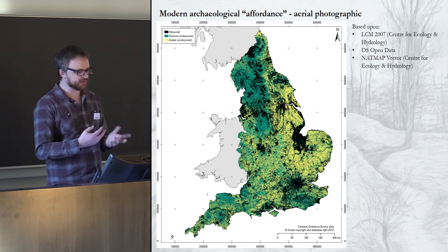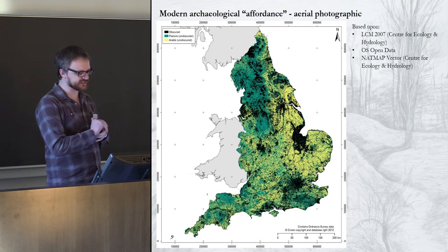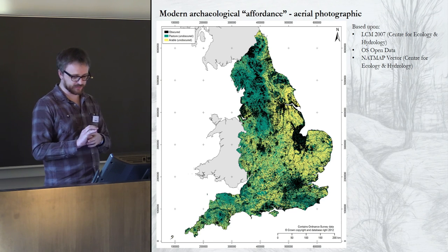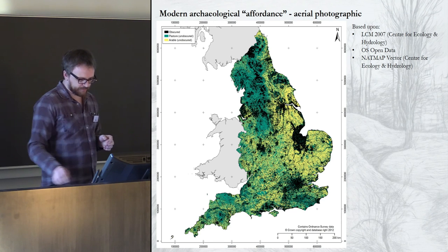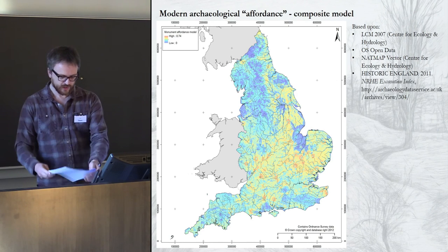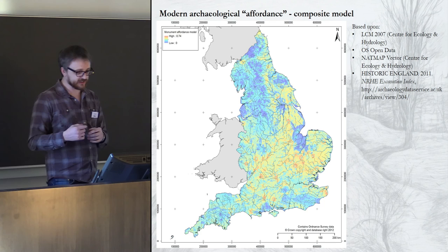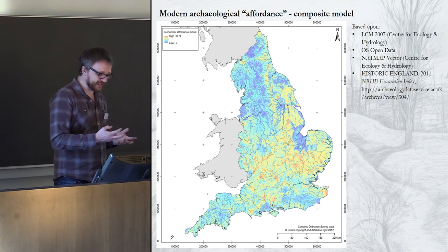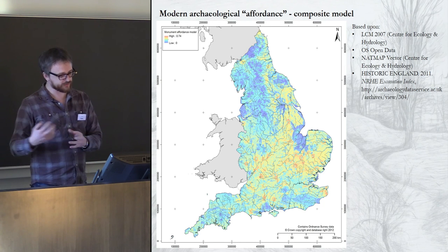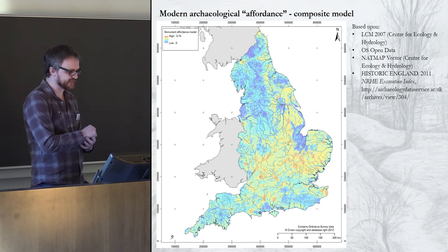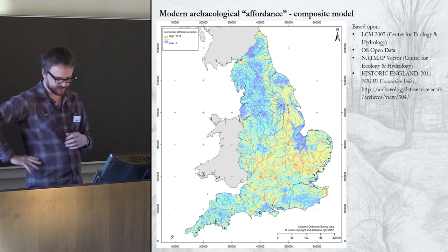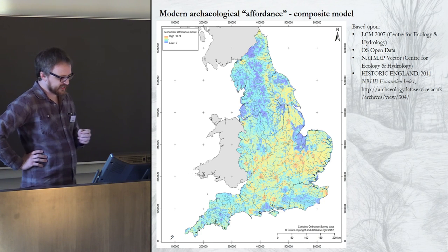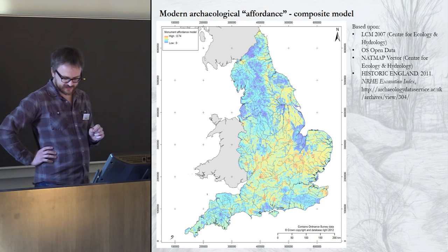This is important because probably at least half the sites in the English archaeological record have either been discovered or at least investigated through aerial photography — probably even more. The other main way sites enter the record is through excavation. Things like geophysics aren't that significant yet as an original source for most sites, because generally speaking it still takes place where people already knew or suspected something was there, and even though people do huge areas of geophysics these days, as a percentage of the country it's still very small.